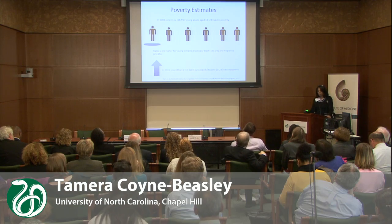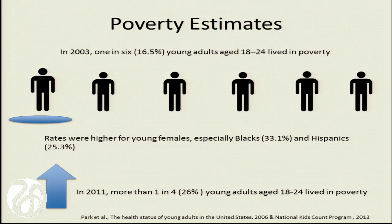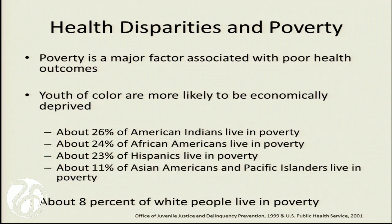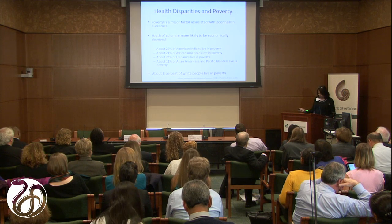What about poverty? In 2003, one in six individuals between the ages of 18 and 24 lived in poverty, highest among females and blacks. By 2011, it's actually about 26% living in poverty. Poverty is a major factor with poor health outcomes. Youth of color — and I purposefully use 'youth of color' rather than 'minorities' — are more likely to be economically deprived: 26% of American Indians, 24% of African Americans, 23% of Hispanics, and 11% of Asians, compared to 8% of white people.